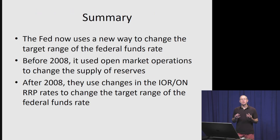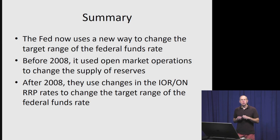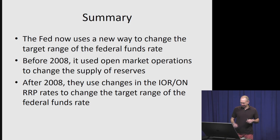The Fed is still using the federal funds rate as its go-to policy tool, except now they're changing it in a way completely differently than they used to. Back before 2008, they would change it by using open market operations. Now they're changing it by adjusting the IOR and ONRP rates in order to change the target range of the federal funds rate. Thank you very much.